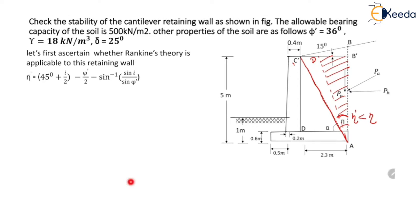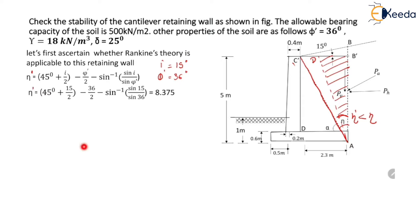For that we will first determine the value of eta dash. The formula for eta dash is: eta dash equals 45 degrees plus i by 2 minus phi dash by 2 minus sin inverse of (sin i divided by sin phi dash). Here the value of i is 15 degrees and phi dash is 36 degrees. Putting these values in the equation, we get eta dash equal to 8.375 degrees.